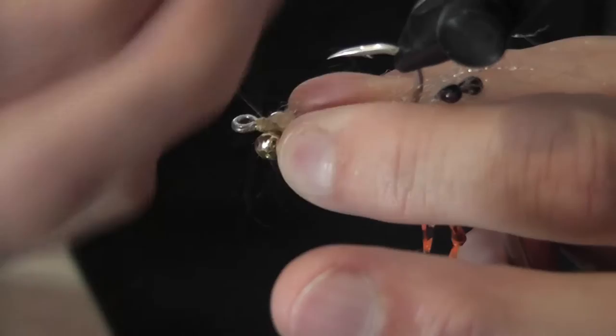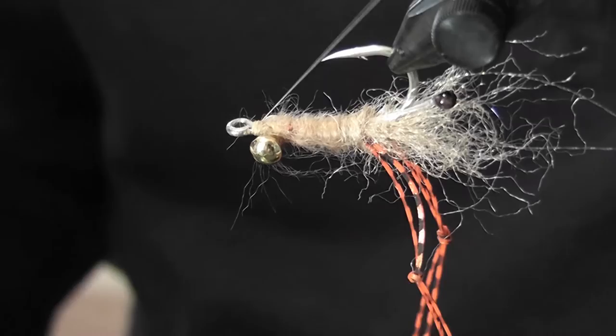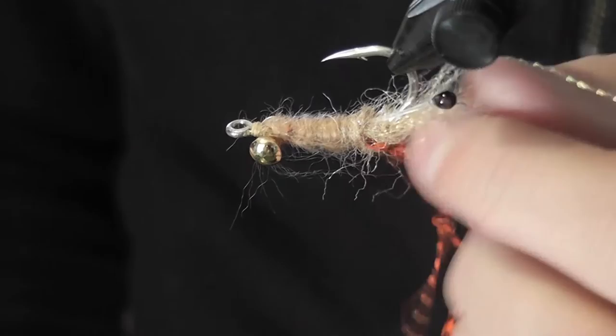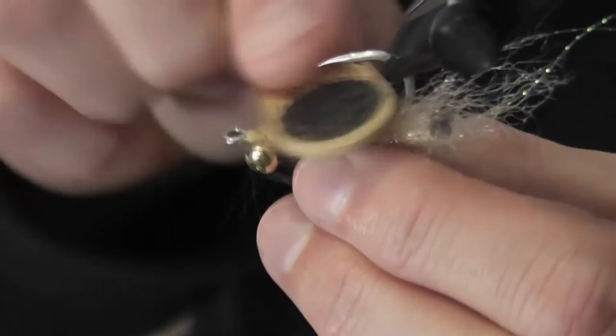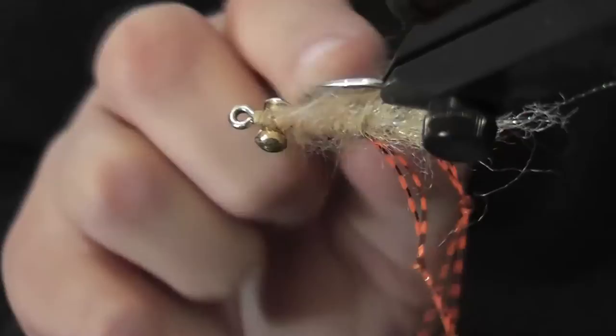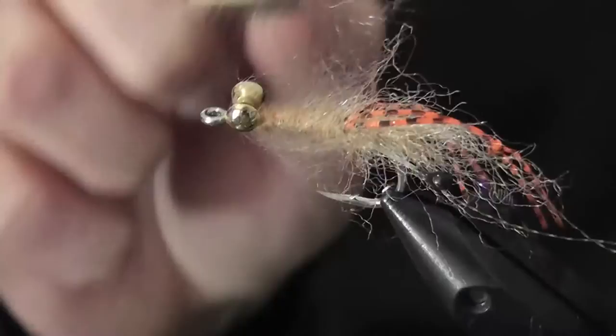So then we take our Velcro dubbing brush and we're going to tease it out all the way around. Make sure you get that EP fiber as well as the fuzzle dub. Looks pretty messy but once you brush it forward, there it is.